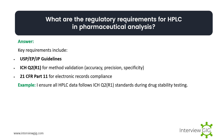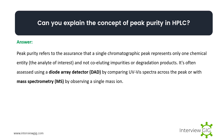Can you explain the concept of peak purity in HPLC? Peak purity refers to the assurance that a single chromatographic peak represents only one chemical entity and not co-eluting impurities or degradation products. It is often assessed using a diode array detector by comparing UV-Vis spectra across the peak, or with mass spectrometry by observing a single mass ion.